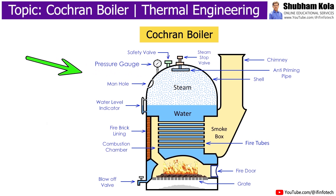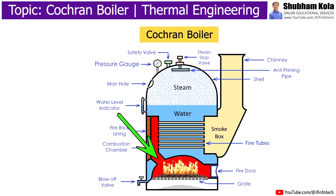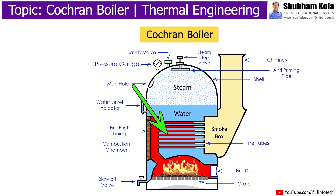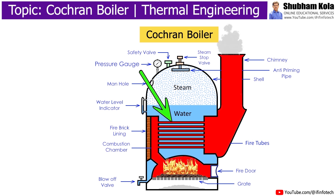The Cochrane boiler consists of a combustion chamber. It has a large area and here burning of fuel takes place. The heat produced here has a certain amount of temperature, and that heat is sent to the fire tubes, and therefore with this amount of temperature the surrounding water gets heated.